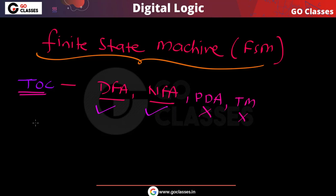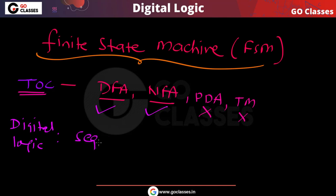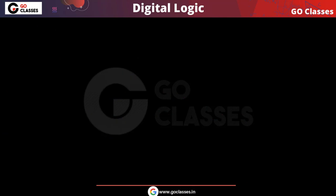Now let me give some other examples from digital logic. In digital logic, for sequential circuits we have created state diagrams. So you can notice you have a sequential circuit.